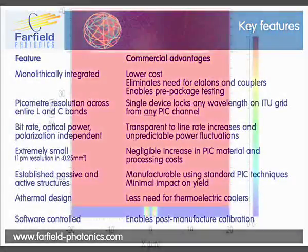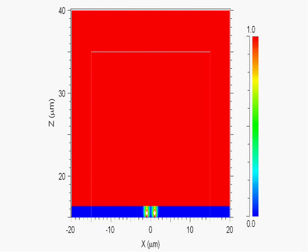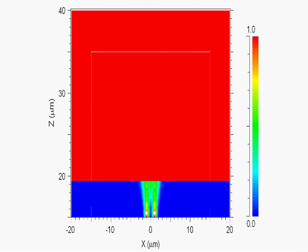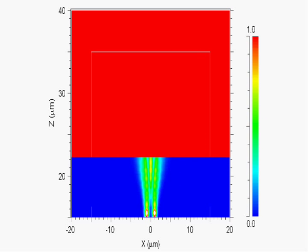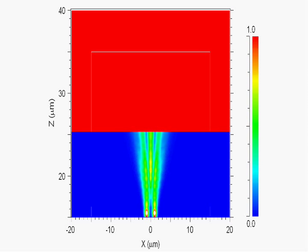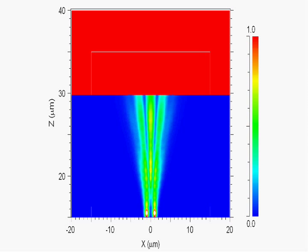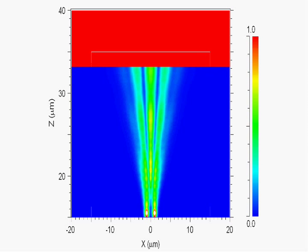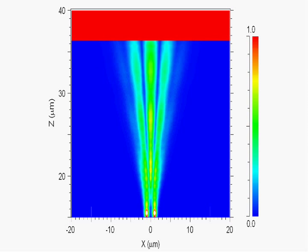Picolock is based on the principles of far-field diffraction between two monochromatic beams. To illustrate this, consider the simplest case of two identical lasers launched into a slab waveguide region. These will interfere with each other to create the well-known diffraction fringe.